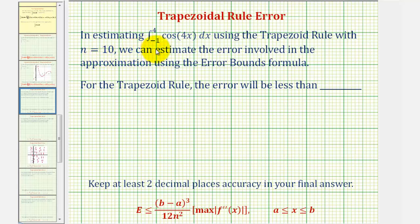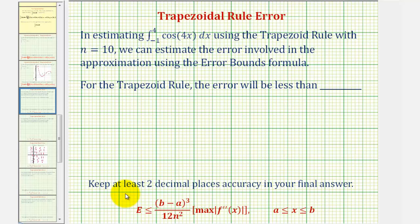In estimating the definite integral of cosine 4x from negative one to four using the trapezoid rule with n equals 10, we can estimate the error involved in the approximation using the error bounds formula, which is given here below.